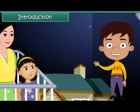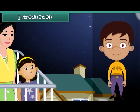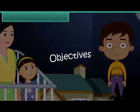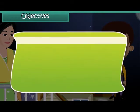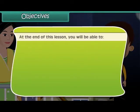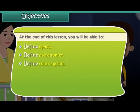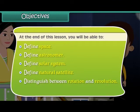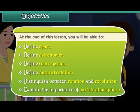In this lesson you'll learn about the objects in space. At the end of this lesson you'll be able to: define space, define astronomer, define solar system, define natural satellite, distinguish between rotation and revolution, and explain the importance of Earth's atmosphere.